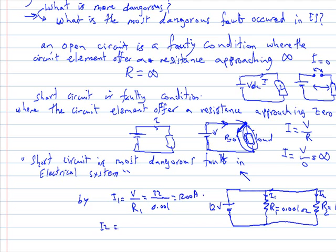I2 is equal to V over R2. It's 12 over 10. It's equal to 1.2 ampere.